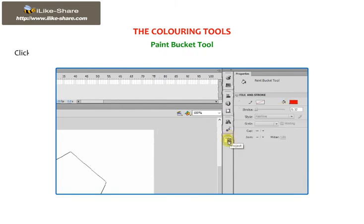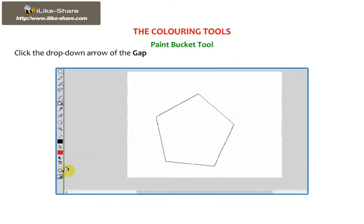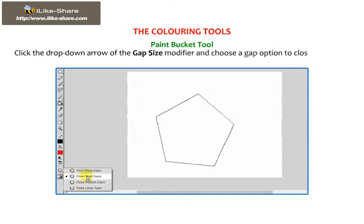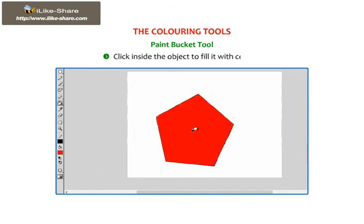Click the drop-down arrow of the Gap Size modifier and choose a Gap option to close the gap in the shape. Click inside the object to fill it with color.